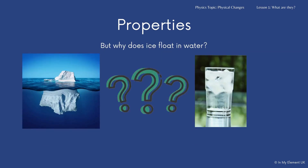One last thing to think about is why does ice float on water? When ice melts to become water, the particles are becoming closer together, so the water's density increases. However, when the water has frozen, the ice has more volume, so it's taking up more space but is less dense. That's why you can see the ice cubes floating in the glass and the iceberg floating in the sea.